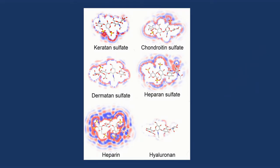Here are six major classes of proteoglycans: keratan sulfate, chondroitin sulfate, dermatan sulfate, heparan sulfate, heparin, and hyaluronan.